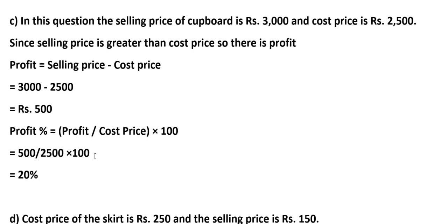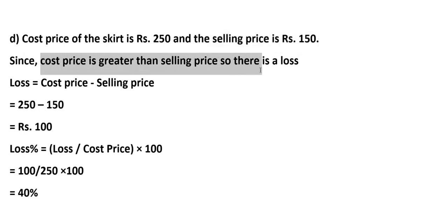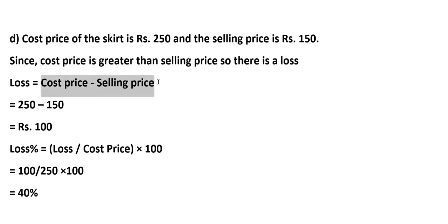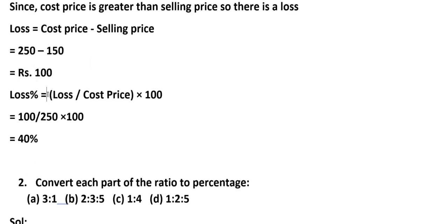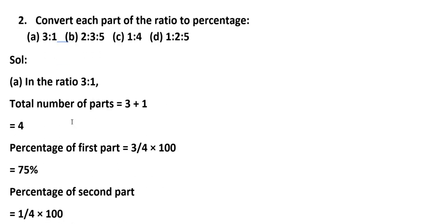We simplify to get 20%. As D: cost price of the skate is Rs. 250 and selling price is Rs. 150. Since cost price is greater than selling price, there is a loss. Loss = Cost Price − Selling Price = Rs. 250 − Rs. 150 = Rs. 100. Loss percentage = (Loss ÷ Cost Price) × 100 = (100 ÷ 250) × 100 = 40%.